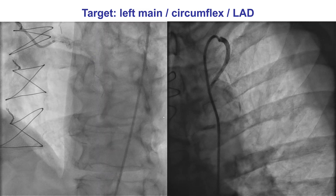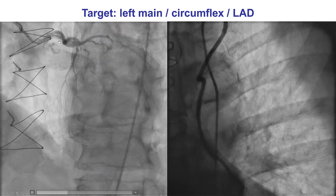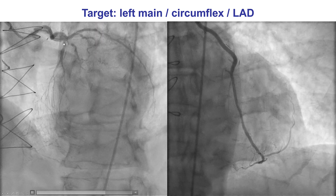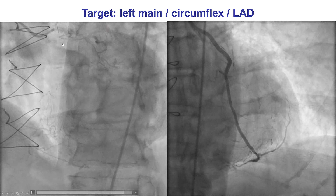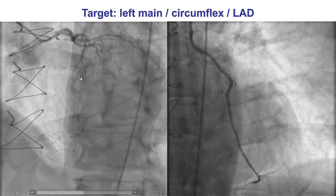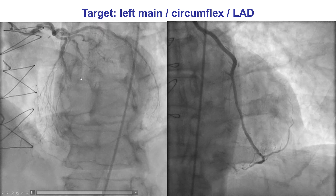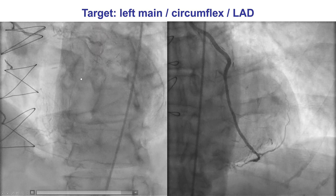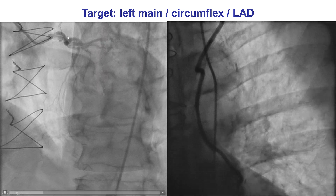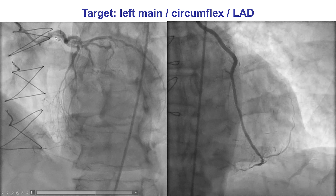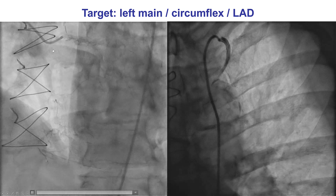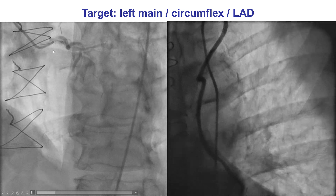Therefore, the decision was made to perform PCI on the left. The rationale was that the right coronary CTO had been present for many years, but the patient has only had symptoms more recently, and there appeared to be progression in the disease on the left system compared with before.